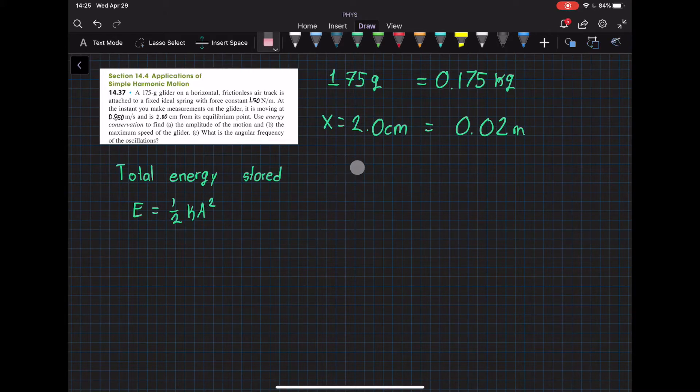Based on the information that I took from the problem, I compared this to the weight of the glider, 2 kilograms, and also the distance. Now the equation that we're going to use is the total energy stored, which is equal to this.